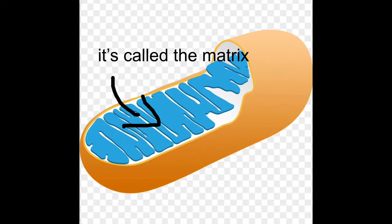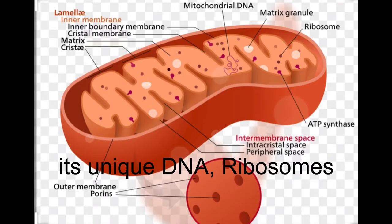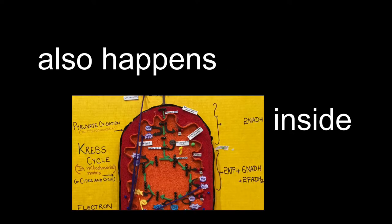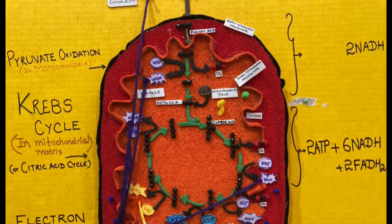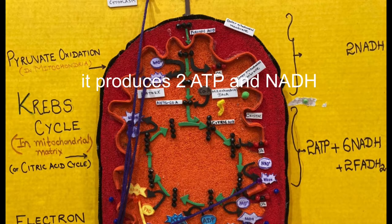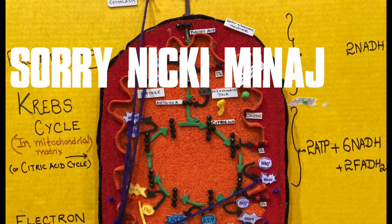The mitochondria has squiggly folds — it's called the matrix. But what does it hold? Its unique DNA, ribosomes, and enzymes. The second process also happens inside. Krebs cycle, let's start — it produces two ATP and NADH.